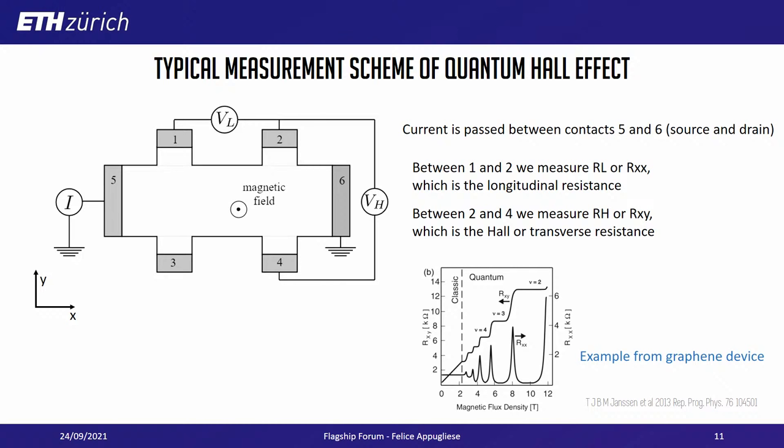In the classical case, the longitudinal resistance — measured in the direction of the current — is flat at the beginning and normally depends on the disorder of the material. Then, at the point where quantum effects appear, it shows oscillations. At some point, these oscillations go to zero resistance states. In the Hall trace, we have a linear increase of the resistance with magnetic field at first, and then the resistance reaches very specific quantized values. What we are interested in for topological protection are the states where we have zero resistance and the plateaus.